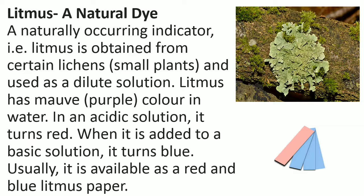Now let us understand what litmus is and how it is obtained. The naturally occurring indicator litmus is obtained from certain lichens. Lichens are nothing but small plants. It is used as a dilute solution. Litmus has a purple colour in water. In an acidic solution it turns red, and when added to a basic solution it turns blue. Usually it is available as red and blue litmus paper, which you can get easily from your nearby store.